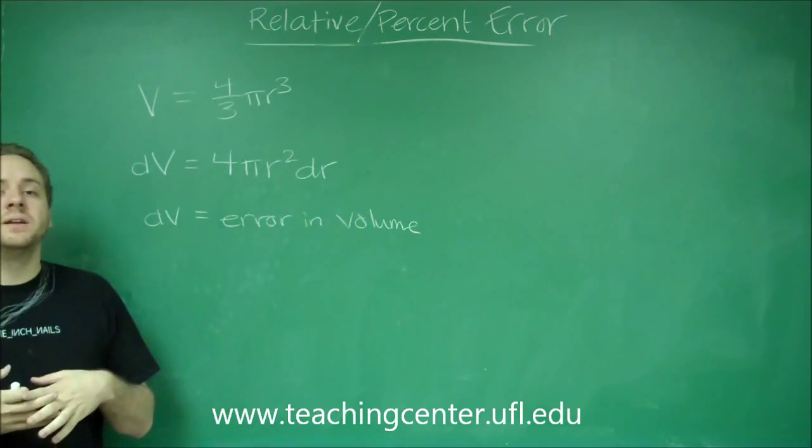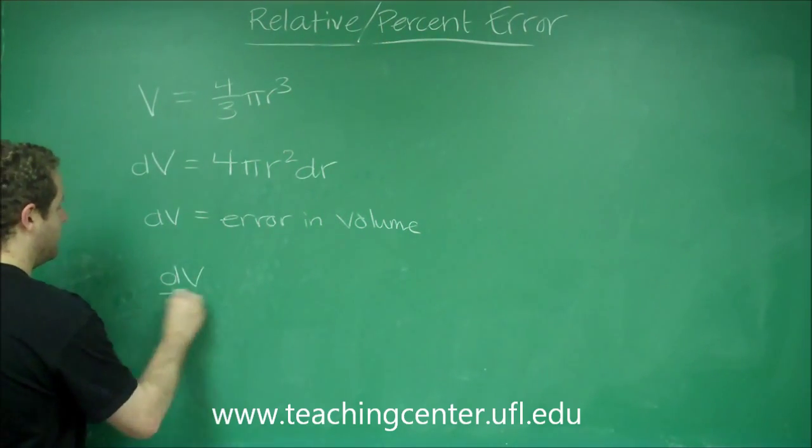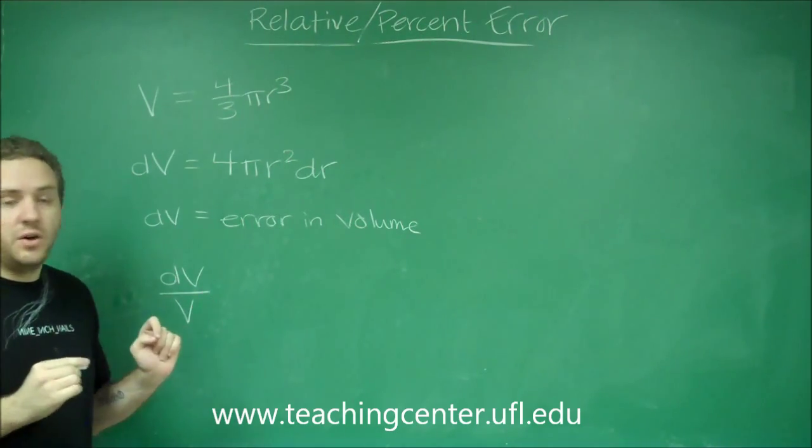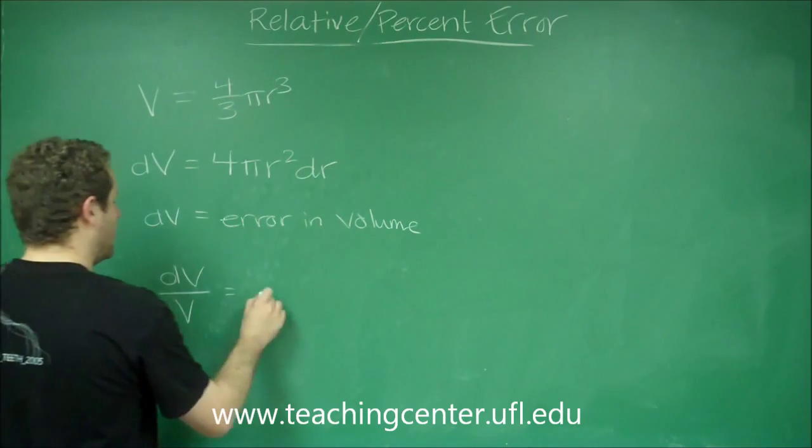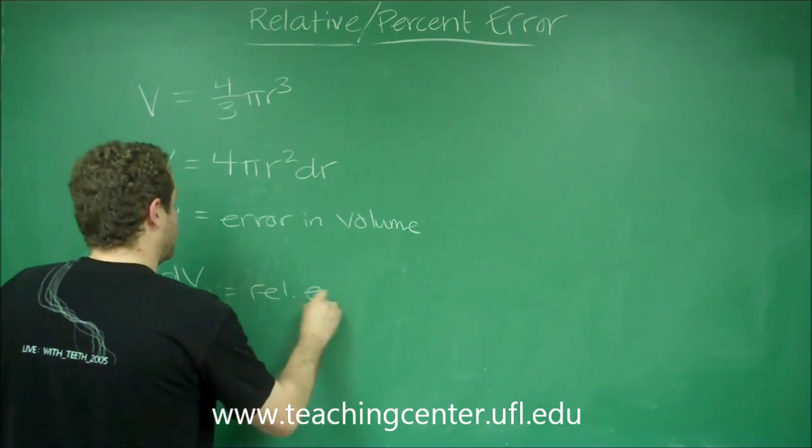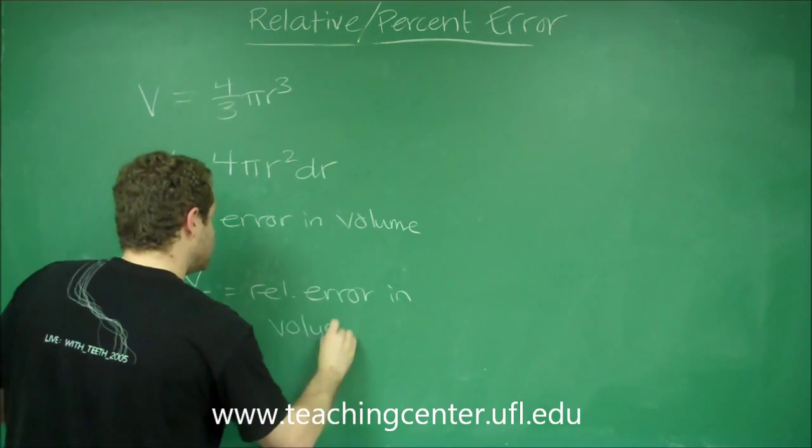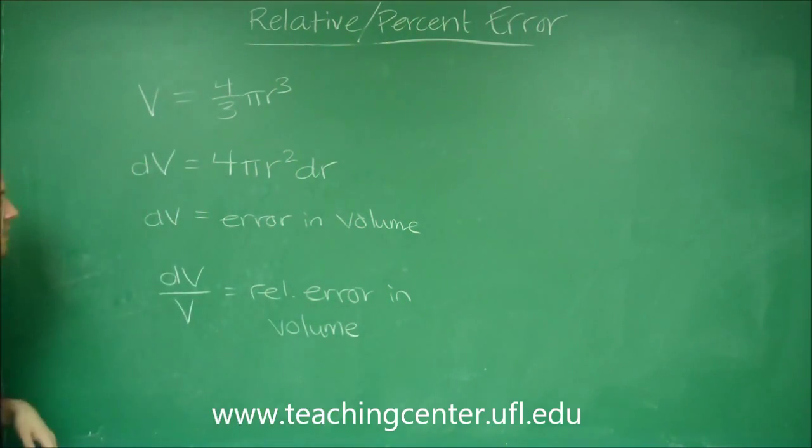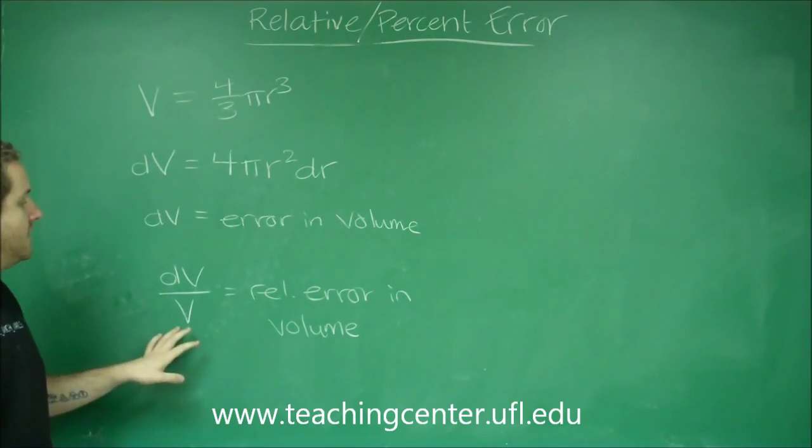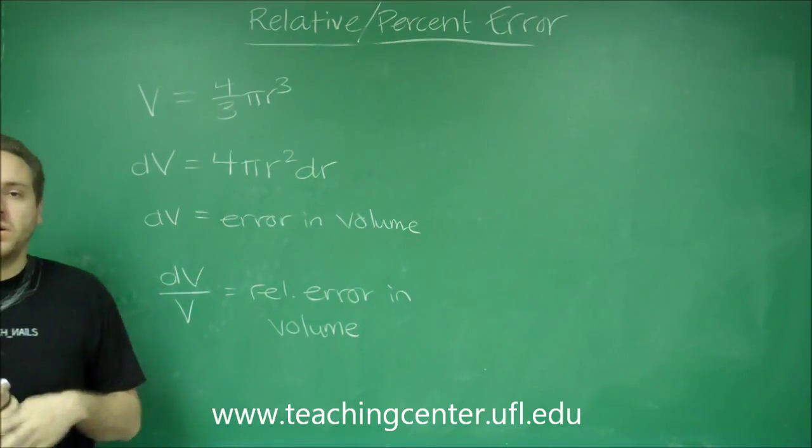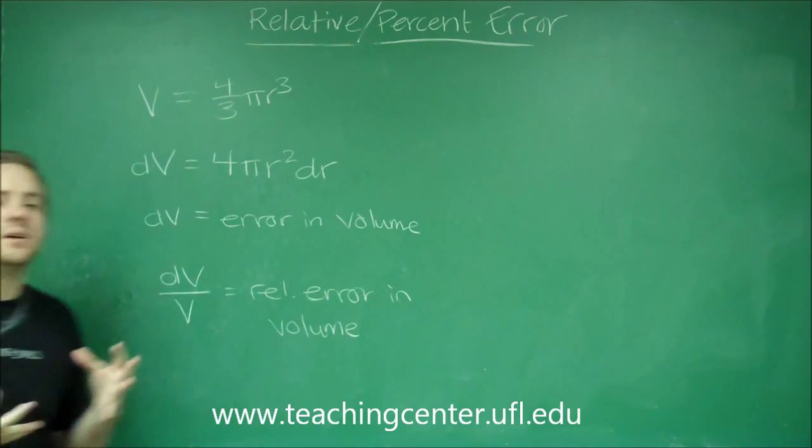So relative is trying to compare it to the actual volume. So dV over V, since we're talking about volume here, but this could be area or anything else like that. So this is relative error in volume. This is usually going to be a pretty small fraction or a decimal, and converting it to a percent by multiplying by 100 gives you the percentage error.